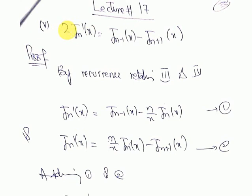The fifth recurrence relation is: 2J'n(x) is equal to J(n-1)(x) minus J(n+1)(x). When we had recurrence relations three and four to prove, we used recurrence relations one and two.